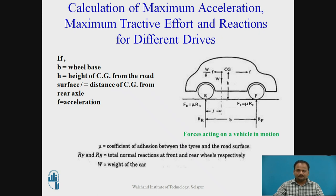In this figure, forces acting on a wheel in motion are shown. Here, B is the wheelbase, CG is the centre of gravity, F is the acceleration, W is the weight of the vehicle, G is acceleration due to gravity, and FR and FF are the tractive efforts at the rear wheel and front wheel respectively.